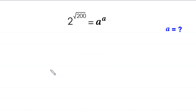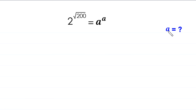Hello everyone, you are welcome to how to solve this very nice exponential equation. 2 to the power root 200 is equal to a to the power a. Our job is to find all possible values of a. So, let us start.